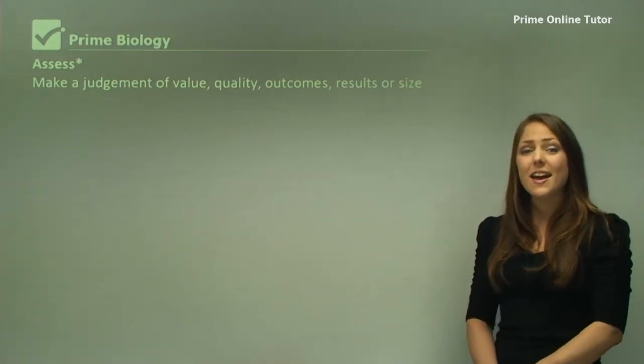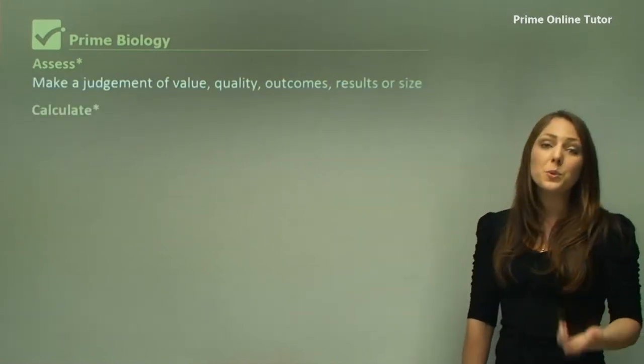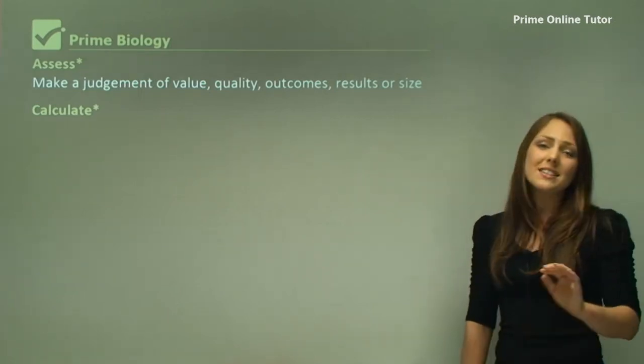You can make a judgment and say that's a very poor experiment because of this, this and this. You do need to explain why you've made that judgment to get the full marks. That tends to be a four to five mark question.